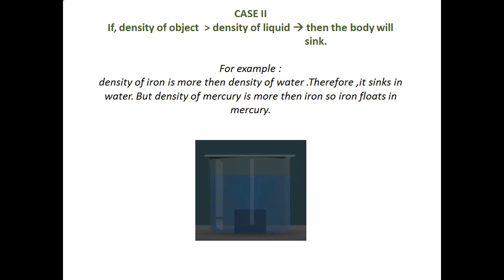Now case 2: if the density of the object is more than or greater than the density of the liquid, then that body will sink. For example, I have shown here the example of iron and water. Since the density of iron is more than the density of water, it sinks in water. But if we compare the density of mercury and the density of a solid, the density of mercury is more than the density of iron, that's why iron floats in mercury.